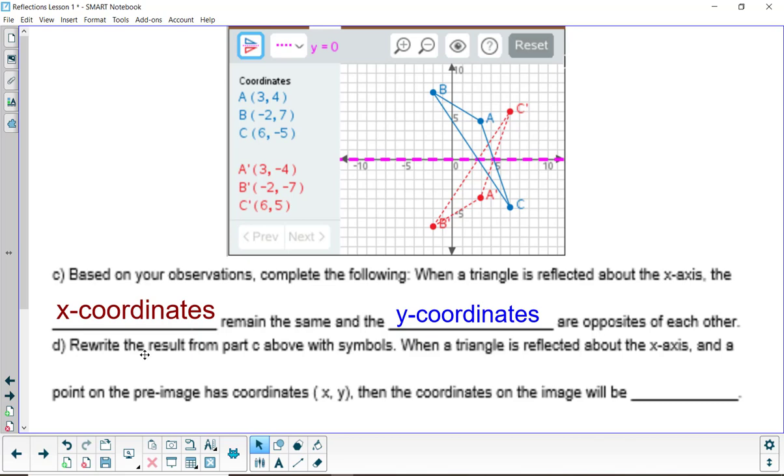Part D, we want to write this with symbols. So when a triangle is reflected about the x-axis and a point on the pre-image has coordinates some number x comma some number y, then the coordinates on the image will be represented how symbolically.